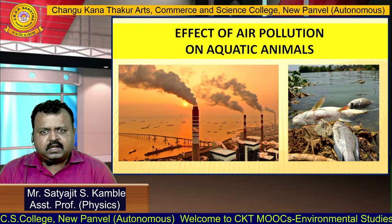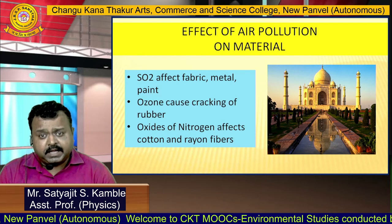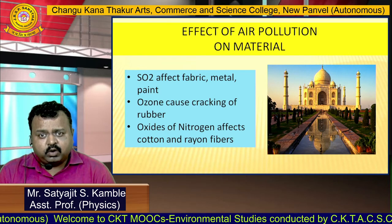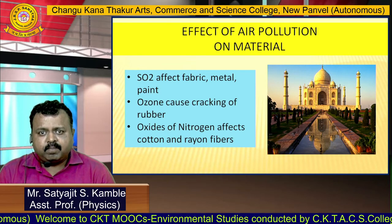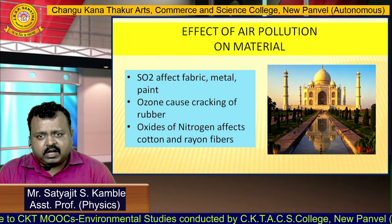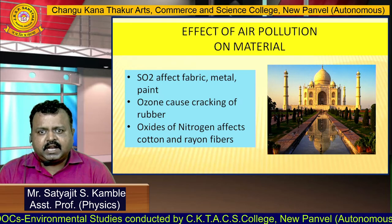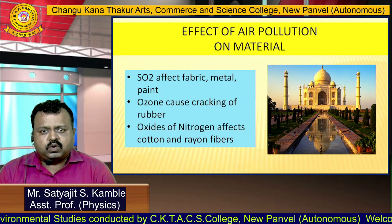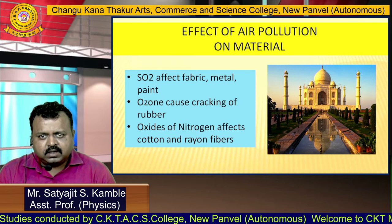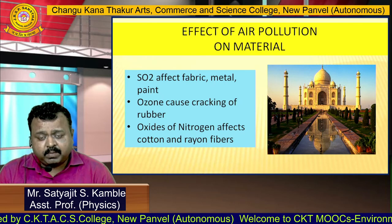Air pollutants can also cause impact on materials. Our Taj Mahal has turned yellow in color because of acid rain. Apart from that, sulfur dioxide affects fabric, metal and paint. Ozone can cause cracking of rubber, and oxides of nitrogen can affect cotton and rayon fibers.